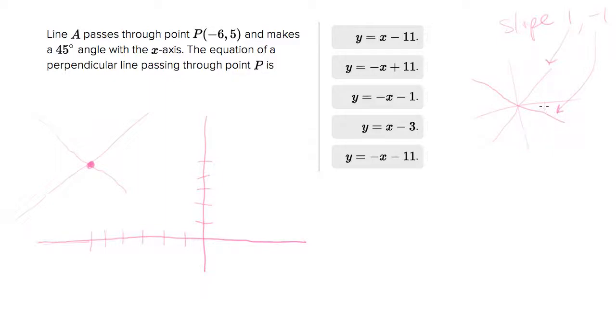Perpendicular lines, what that does to the slope is the negative inverse of the slope. So if your slope is 1, the negative inverse of that is -1/1 or -1. So 1 and -1, those lines are perpendicular to one another.